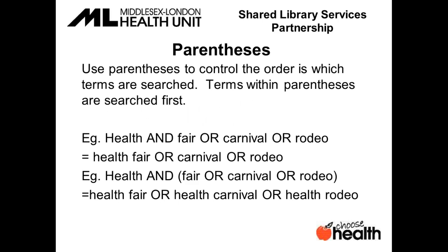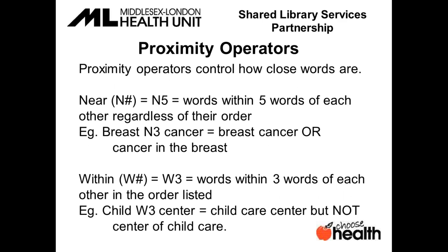Parentheses are used to control the order in which terms are searched. Terms within parentheses are searched first. If you do not use parentheses, the AND operator is searched first. For example, if you searched without parentheses the terms health and fair or carnival or rodeo, you will retrieve results containing both the words health and fair, as well as results about carnivals in general and rodeos in general. If you put parentheses around the terms fair, carnival, and rodeo, the database will retrieve all the results with those terms, then AND them with health, so your results will contain either health fair, health carnival, or health rodeo.